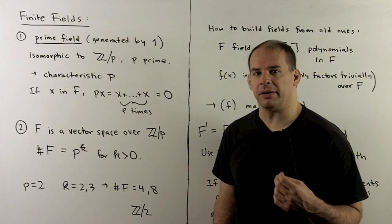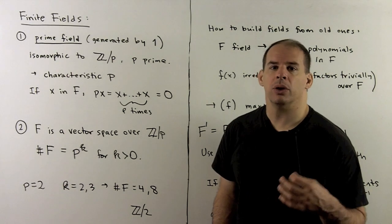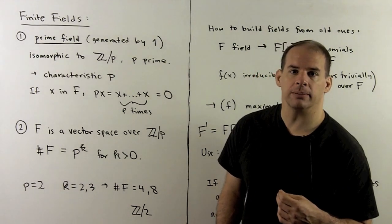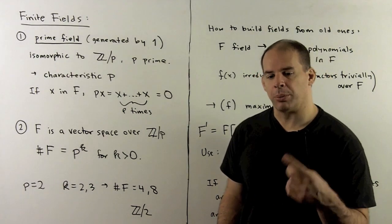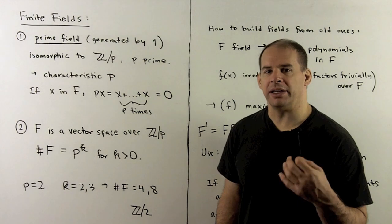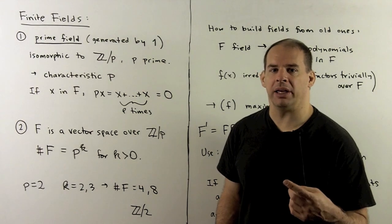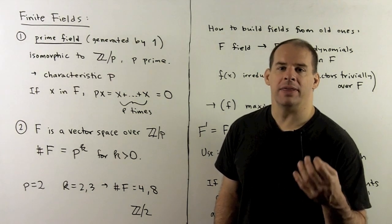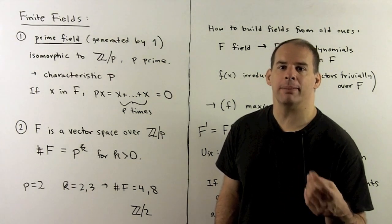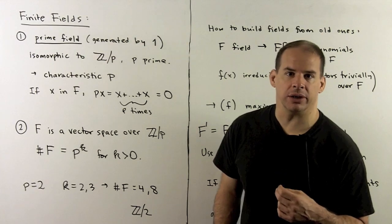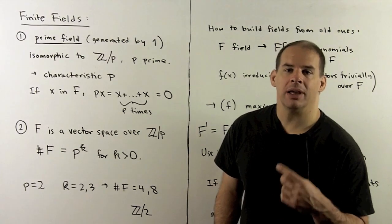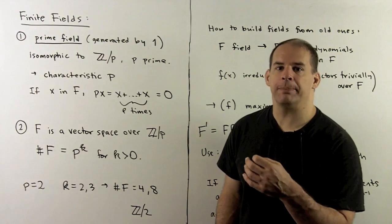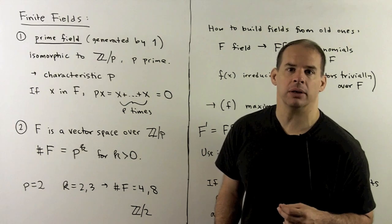To produce examples of finite fields, we've seen one method for construction: take a prime integer p, form the ideal generated by p in the integers, then take the quotient ring of the integers modulo that ideal. That produces the integers modulo p, and we've seen before that that's a field.